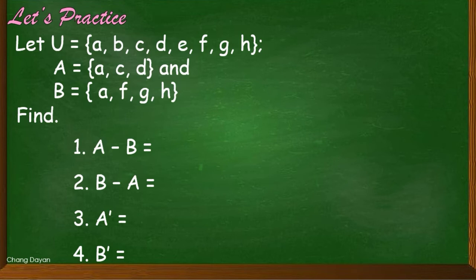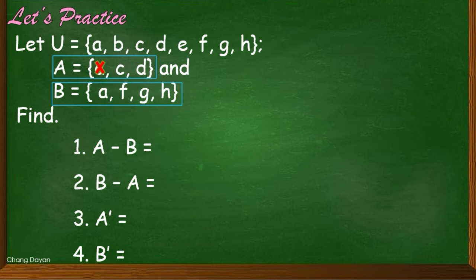Now we are to find the difference between A and B. We need to exclude the elements that are present in set B, and that is A. The remaining elements in set A are C and D. Therefore, A minus B is equal to C, D.